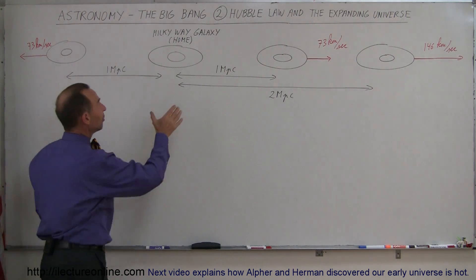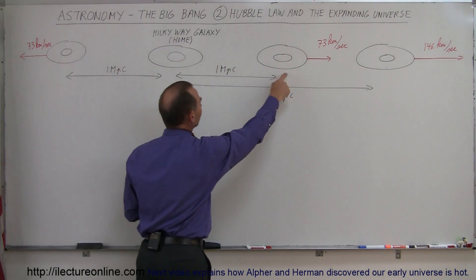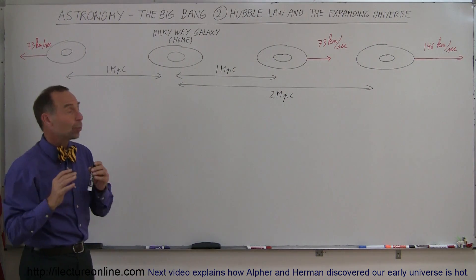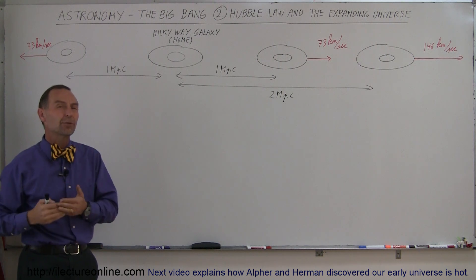So, case in point, if this was our own galaxy right here, the Milky Way galaxy, he would look at another galaxy, let's say 1 megaparsec away, and he began to realize that that galaxy was moving away from us at 73 kilometers per second.